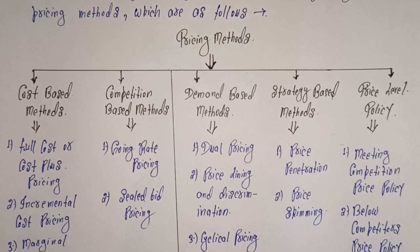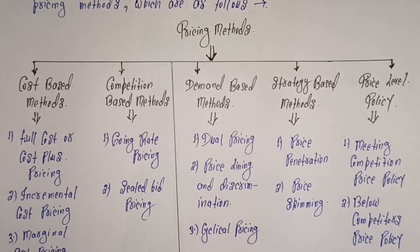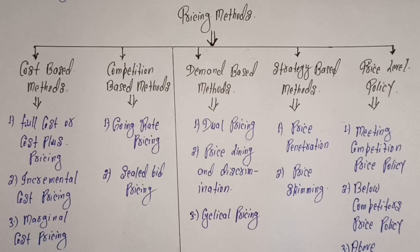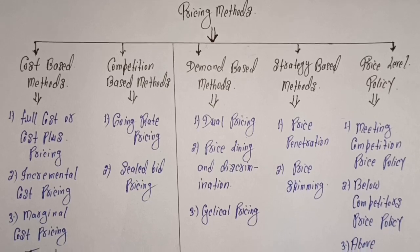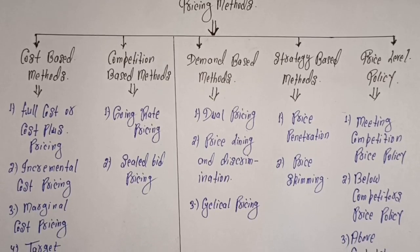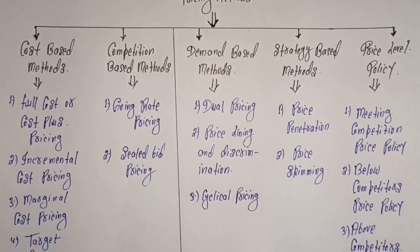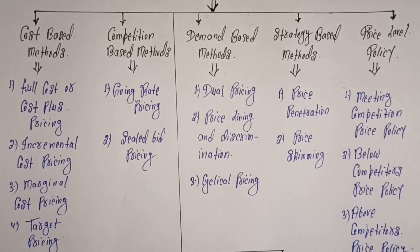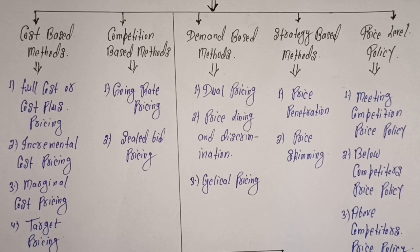Under cost-based methods, the first method is full cost or cost-plus pricing, the second is incremental cost pricing, the third is marginal cost pricing, and the fourth is target pricing. Under competition-based methods, we will discuss two methods: going rate pricing and sealed bid pricing.